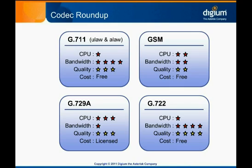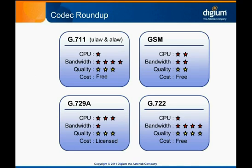Every VoIP call uses a codec. If everything is working properly, most users won't know or care what codec they're using, but as an administrator it's important to know what codecs your Asterisk system uses. You should be particularly aware of the impact VoIP calls have on your network, and how your Asterisk system handles the transcoding you request of it. In general, you should try to use the codecs that consume the least amount of bandwidth while providing acceptable audio quality, and you should minimize transcoding when you can. If you can standardize on a single codec for all devices and trunks Asterisk connects to, it may be worth doing so.